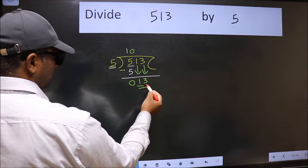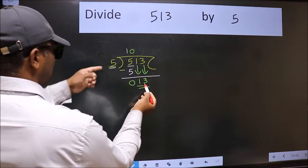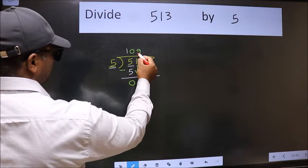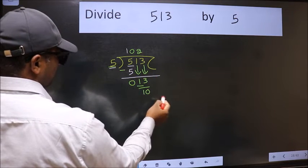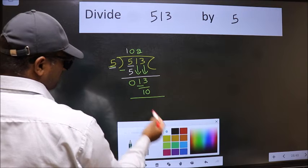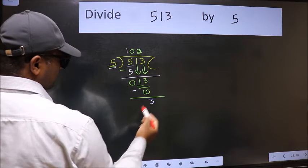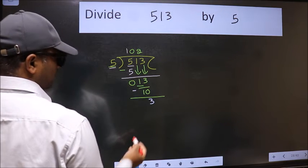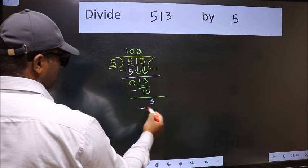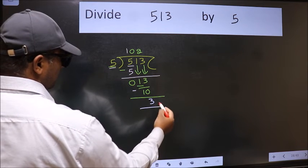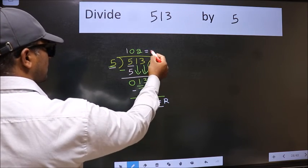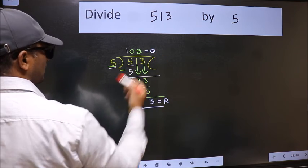Now we have 13. A number close to 13 in the 5 table is 5 times 2 is 10. Now we should subtract. We get 3. No more numbers to bring down, so we stop here. This is our remainder and this is our quotient.